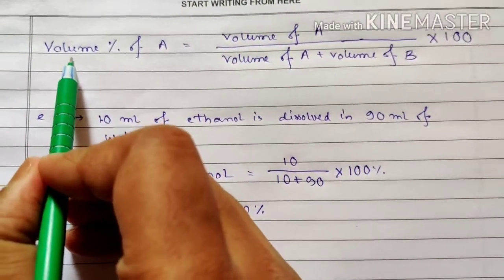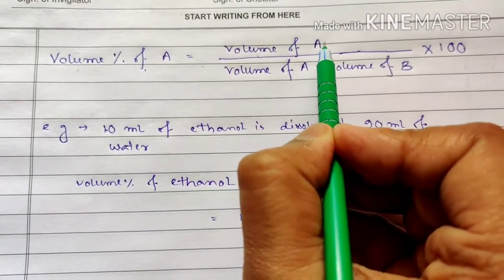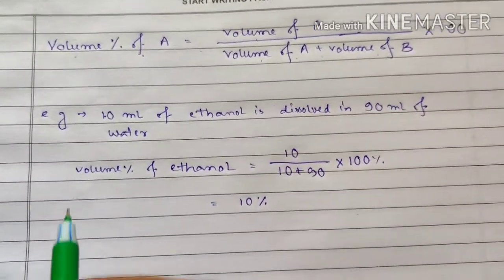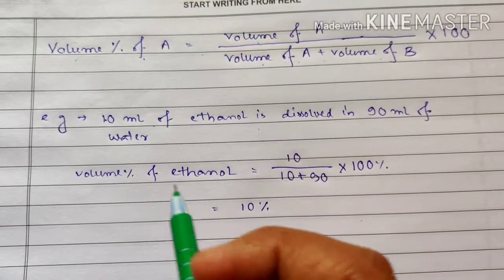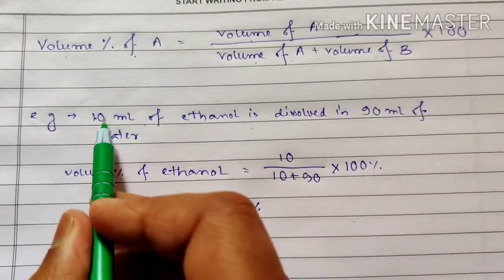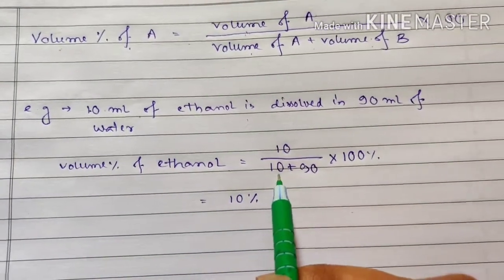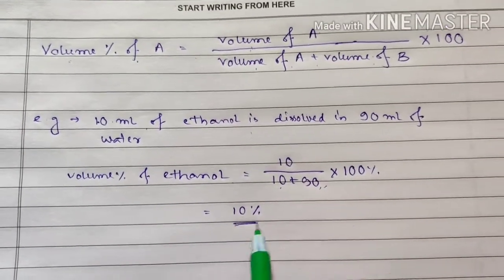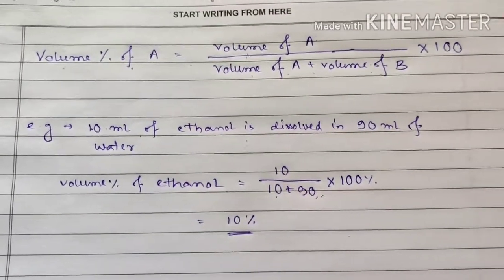Volume percentage is very similar: volume percentage of A equals volume of A divided by (volume of A plus volume of B), into 100. For example, if 10 ml of ethanol is dissolved in 90 ml of water, the volume percentage of ethanol is 10 divided by (10 + 90), which gives 10%. That is how volume percentage is calculated.